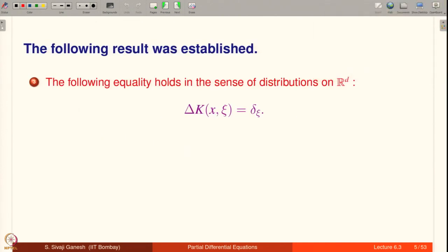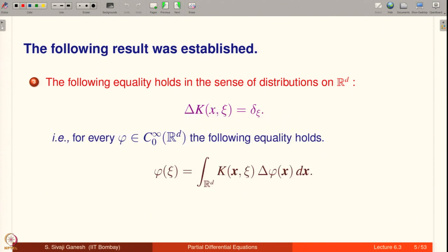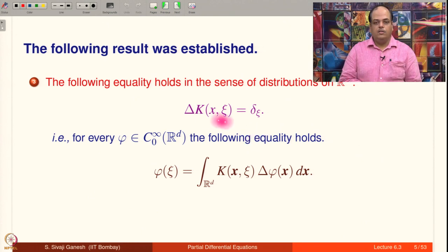The following result was established: the Laplacian of k(x, ξ) equals δ_ξ for every fixed ξ in R^d, where the Laplacian is in the x coordinates. This means that for every φ which is a C^∞ compactly supported function in R^d, φ(ξ) is given by the integral over R^d of k(x, ξ) times the Laplacian of φ(x) dx.